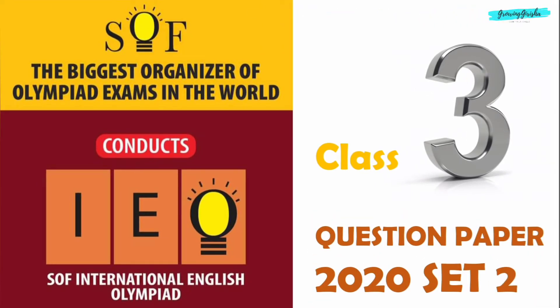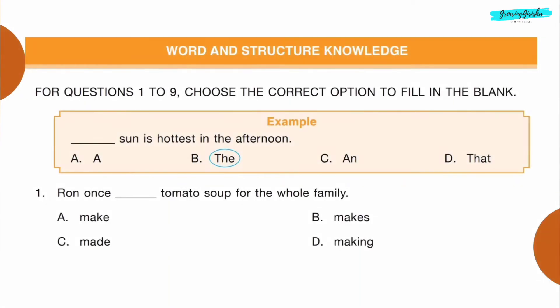International English Olympiad question paper 2020, Set 2 for Class 3. The best way to practice is to pause the video after every question and select your answer.